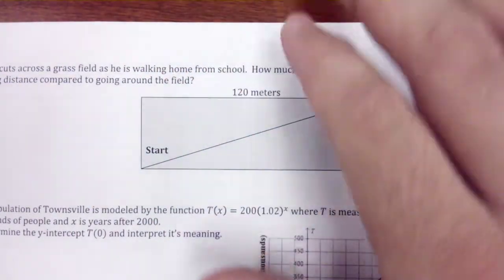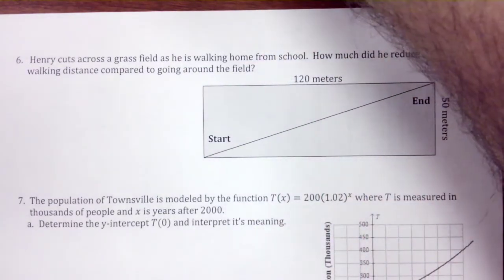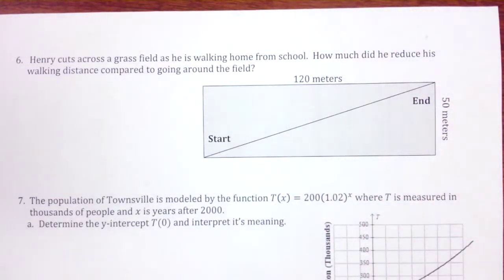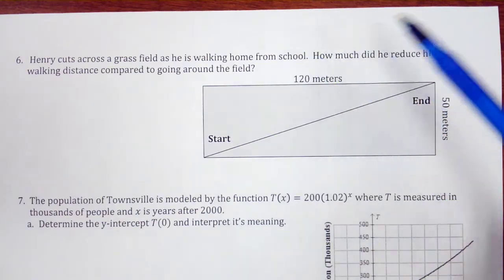Okay, and our last question for this video. Henry cuts across the field as he is walking home from school. How much did he reduce his walk distance compared to going around the field? So there's a field, 50 meters by 120.